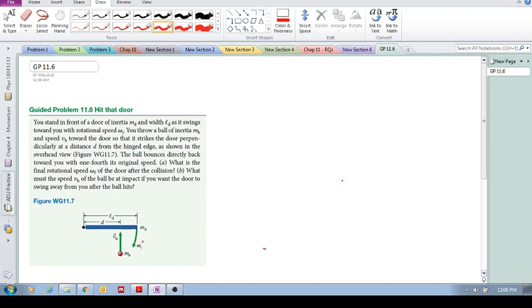So it's swinging towards you with a rotational speed omega I. You throw a ball of inertia MB and speed VB toward the door, so that it strikes the door perpendicularly at a distance D from the hinged edge. After it strikes the door, the ball bounces directly back towards you with one-fourth its original speed. You throw it, boom, comes back. So the door is moving, you throw it, it hits the door perpendicular, and it moves back.